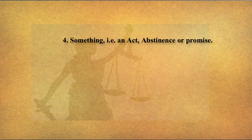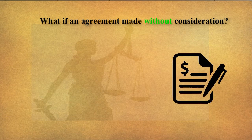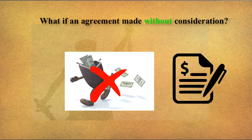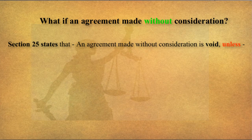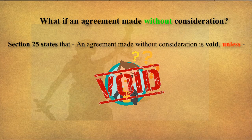Now let's check out what is meant by void consideration. Void means not acceptable or not legal, so it is not enforceable. The more important point is enforceability — since it is void, it is not enforceable. As per Section 25, an agreement made without consideration is void. As we started this class with: without consideration, the agreement is void.